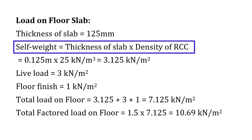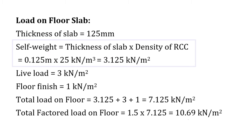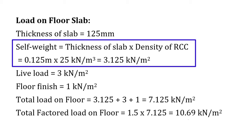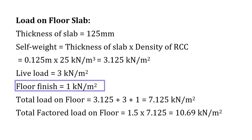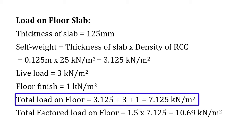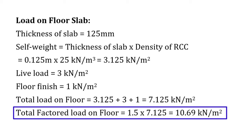The self weight of the floor slab equals thickness of slab times density of RCC. With slab thickness 125 mm and RCC density 25 kN/m³, self weight of floor slab equals 3.125 kN/m². Live load on floor slab is 3 kN/m² and floor finishing is 1 kN/m². Total load on floor equals 7.125 kN/m², and the total factored load on floor equals 1.5 × 7.125 = 10.69 kN/m².